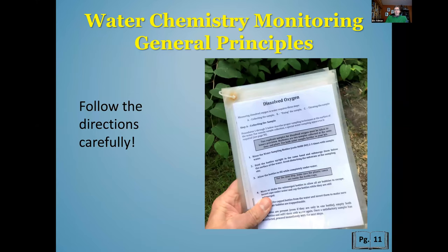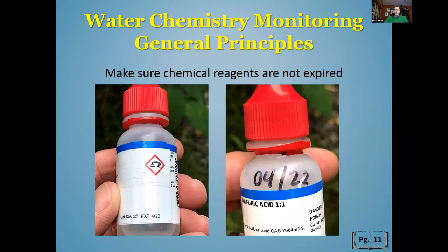There are some general principles to follow when monitoring. First, follow the directions carefully — always have a set of written directions with you, because if you forget a step, your test won't turn out right. The tests in the Lamont kit use reagents, and each has an expiration date. Before going out, check that none of the reagents are expired, as that can also affect your test results.